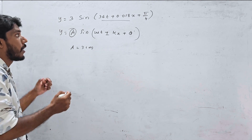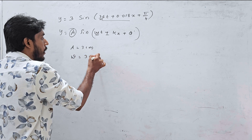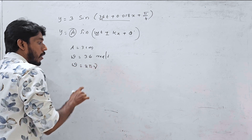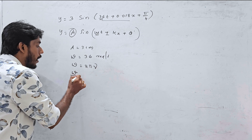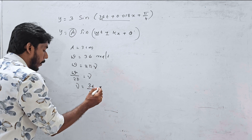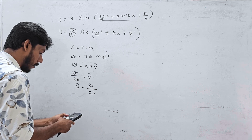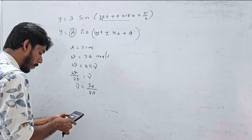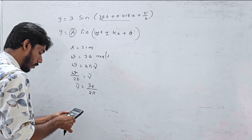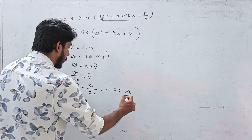What is the frequency? Omega ω equals 36 radians per second. Since ω = 2πν, then ν = ω/(2π) = 36/(2π) = 36/6.28, which gives approximately 5.73 Hz.